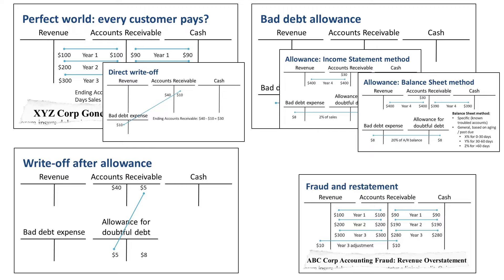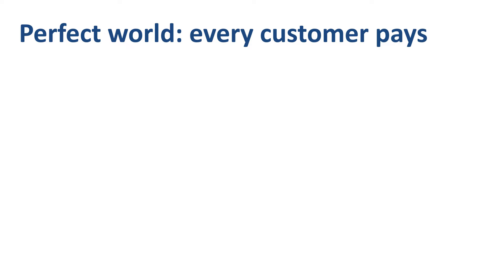Let's get started with a simple example and build up the discussion of bad debt with step-by-step examples. Let's imagine a perfect world where every customer always pays his bills. In that case you need just three accounts to record the journal entries for the billing and collection cycle.